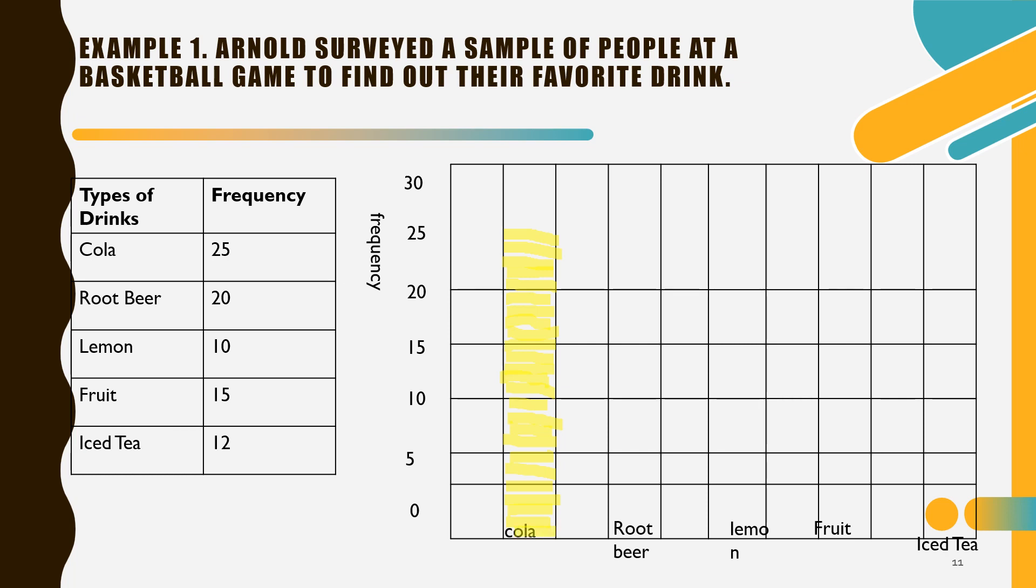Next, for root beer, we have, let's change the color. We'll use this one. Root beer, 20 people like root beer. You can use different colors. You may use crayons or pencil and how you are going to construct your bar graph. And then, for lemon, we have, let's change again another color. This one. Lemon is 10. That means less. It depends on how you prepare the lemon, because it's sour if you don't get the right consistency.